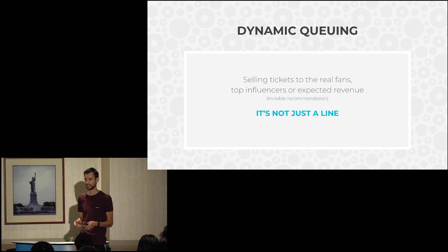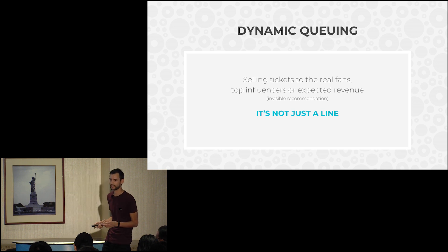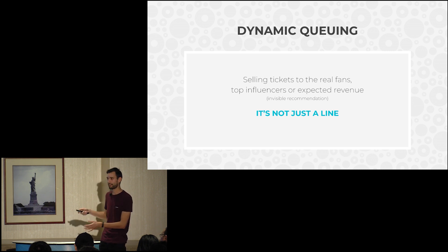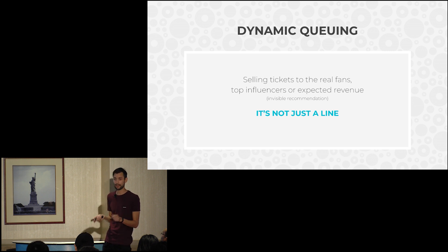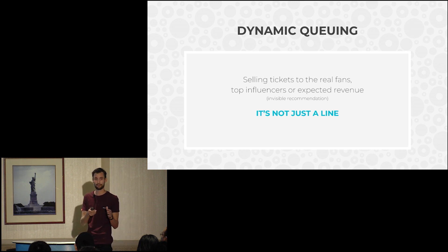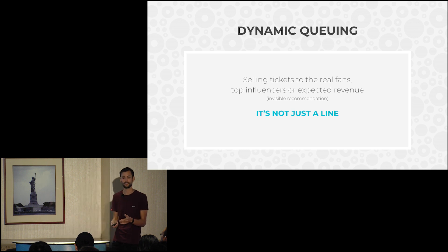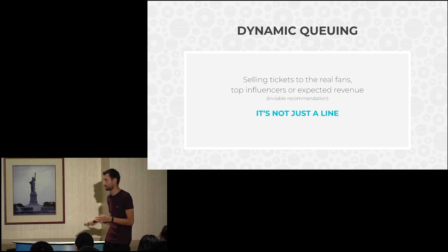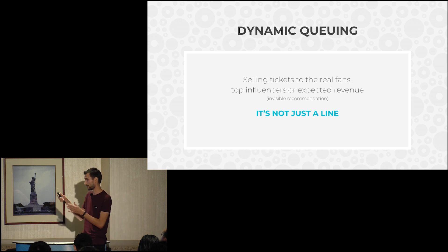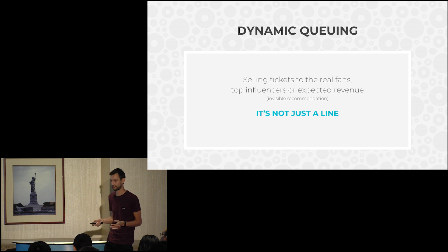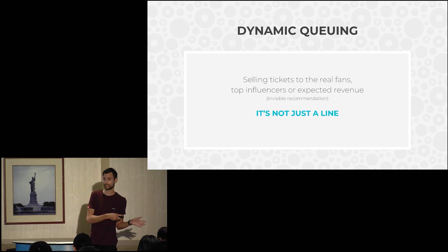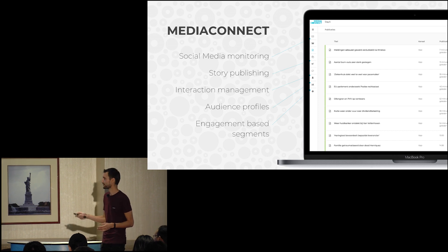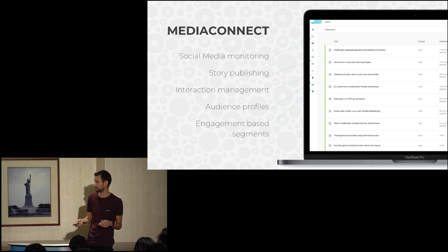We use that data for dynamic queuing. If you have a festival with 200,000 tickets but 500,000 people wanting to buy them, we dynamically queue them so the people we want at the festival can buy tickets first. That can be people who go every year — our real fans — or top influencers with more social interactions, or even how many beers they drank at last year's edition, meaning they make more revenue. All those things are connected back into the database.